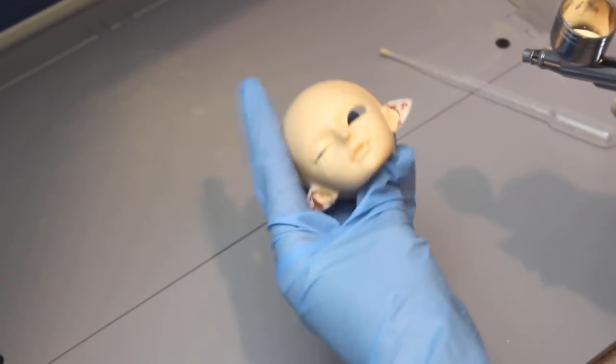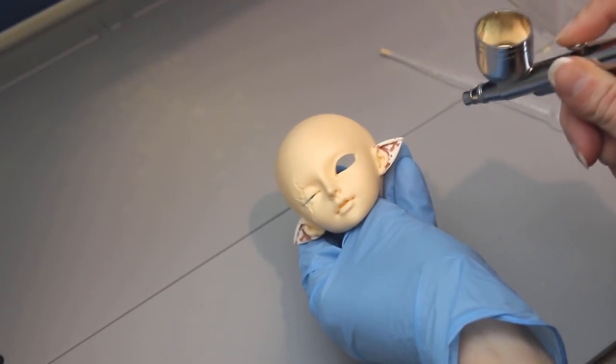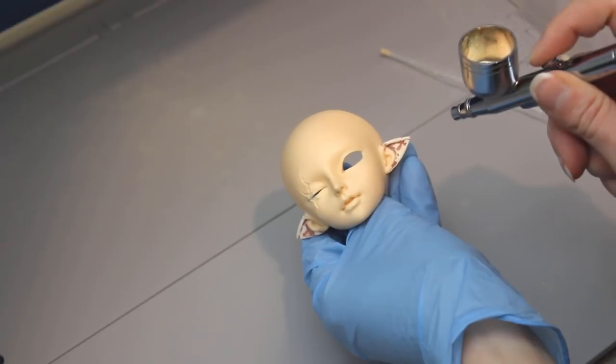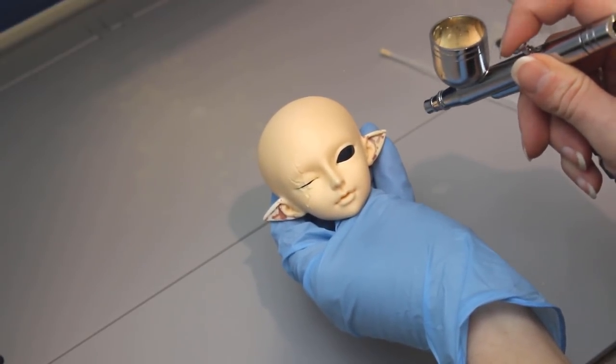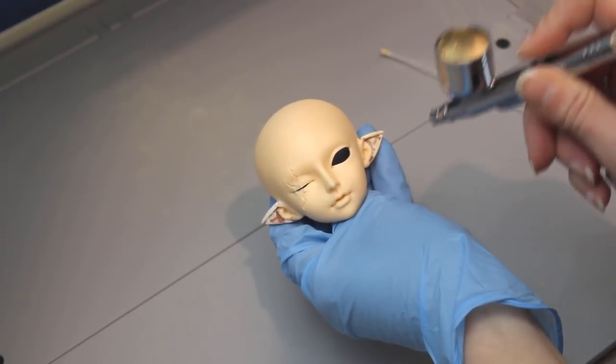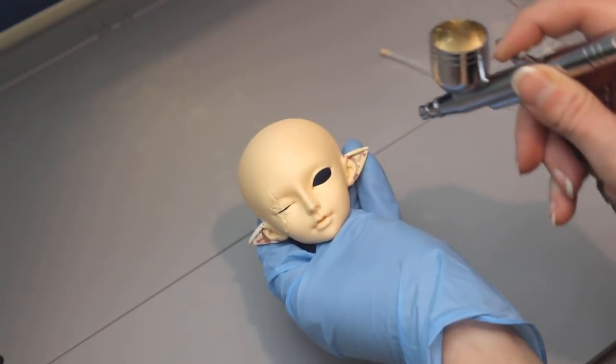I push down on the trigger to start the airflow and pull the trigger back to start the paint flow. You can move in circular patterns, side to side, up and down, whatever works best for you. Everyone will develop a different method, and that's okay. In between each layer of paint, I like to press the trigger and use just the airflow to help speed up the drying.